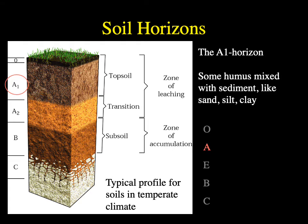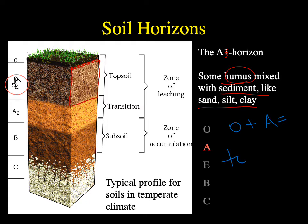Below that is the A layer, which has some humus but is also mixed with sediment — sand, silt, or clay. In a temperate region soil, the A layer is quite a bit thicker than the O layer and still has a rich brown color, slightly lighter than the O. Taken together, the O and A layers are what we call topsoil — the organic-rich stuff. When you buy a bag of topsoil at a home improvement store, you're essentially buying someone's O and A layer.